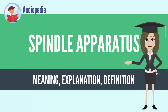Spindle apparatus. In cell biology, the spindle apparatus or mitotic spindle refers to the cytoskeletal structure of eukaryotic cells that forms during cell division to separate sister chromatids between daughter cells.